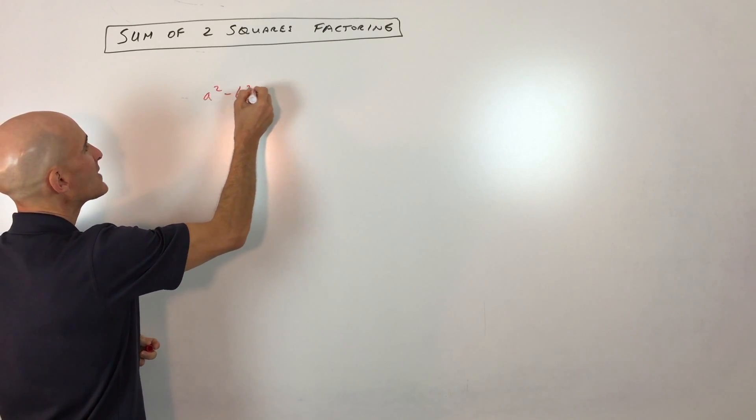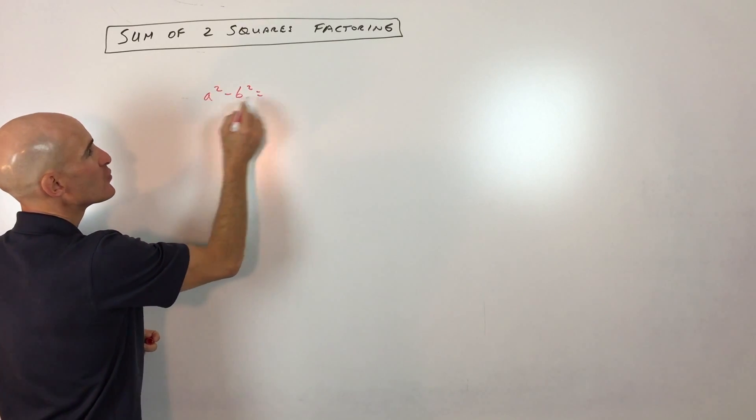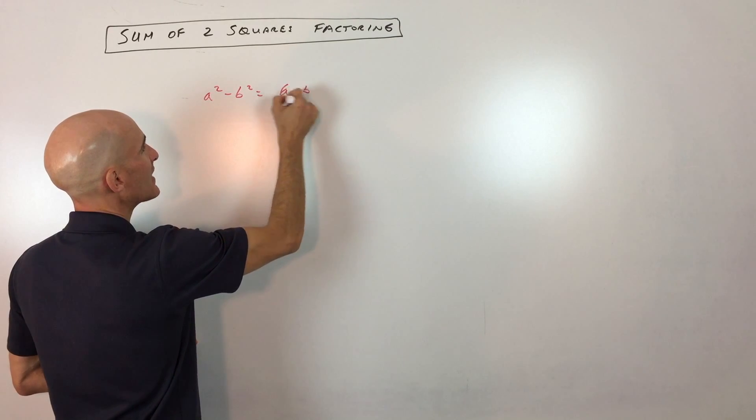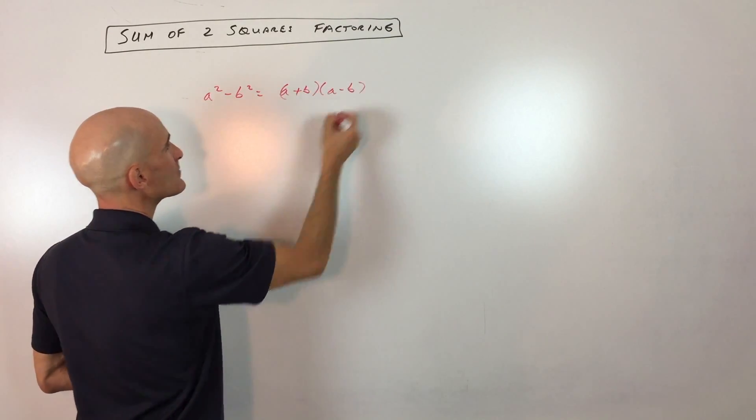You factored a squared minus b squared, which is a difference of two perfect squares, and you factored it like this: a plus b, a minus b.